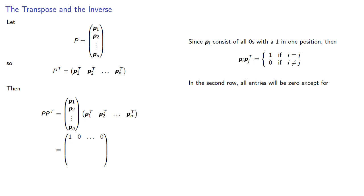In the second row, all entries will be zero except for the second row, second column entry, which will be one.